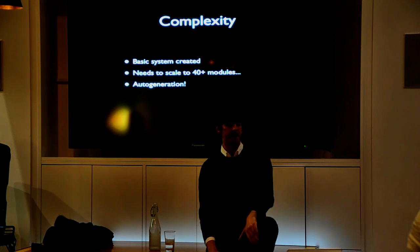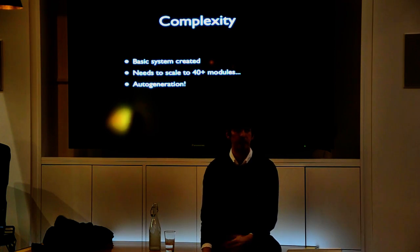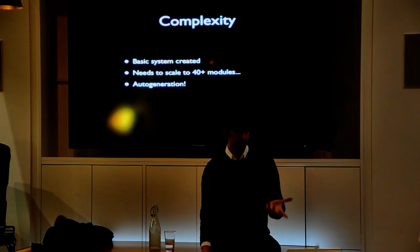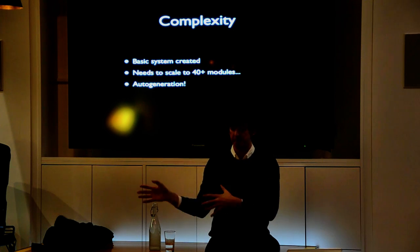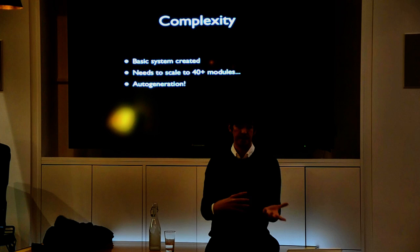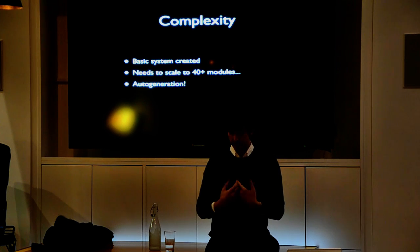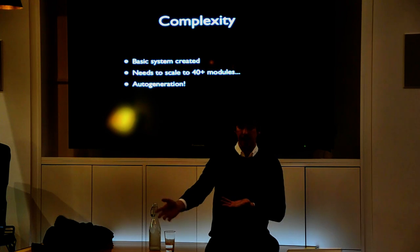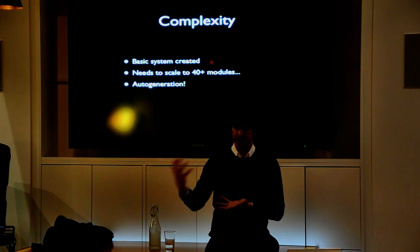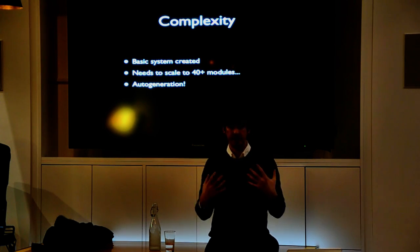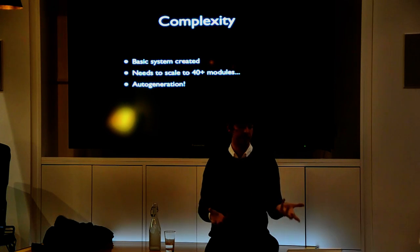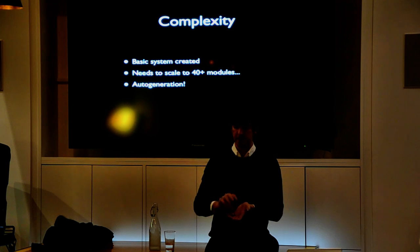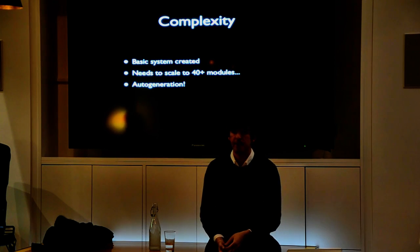The basic system was created first. Then we needed to scale up to 40-plus modules. As you scale up it gets very complex to maintain the code — if you have 40 modules with all this repetition, they all have process functions and different parameters to set. So we decided to use auto-generation. Rather than repeating ourselves 40 times, we write one XML file that describes every module in the synthesizer. A script reads that XML and auto-generates all the files for us, so we don't have to maintain enormous numbers of files for each pin's inputs and outputs.